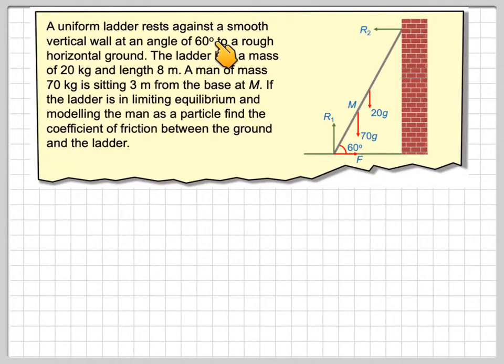A uniform ladder rests against a smooth vertical wall at an angle 60 degrees to a rough horizontal ground. The ladder has a mass of 20 kilograms and a length of 8 meters. A man of mass 70 kilograms is sitting 3 meters from the base at M.